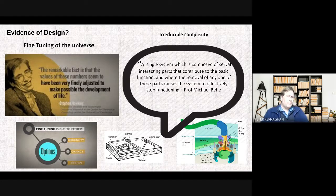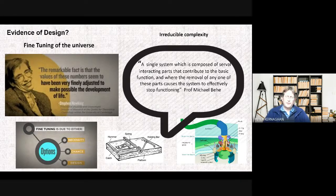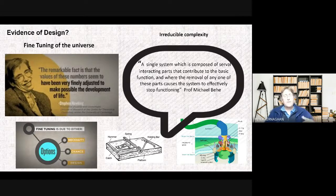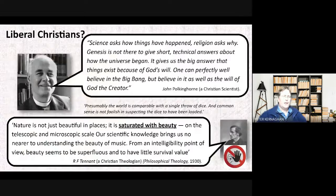Another evidence used for design is irreducible complexity, associated with Michael Behe. He accepts many aspects of evolution but argues it isn't as powerful as Dawkins claims in The Blind Watchmaker. Behe defines an irreducibly complex system as 'a single system composed of several interacting parts that contribute to the basic function, where the removal of any one part causes the system to effectively stop functioning.' His example is the bacterial flagellum, which resembles an outboard motor — remove any single part and the organism cannot function.